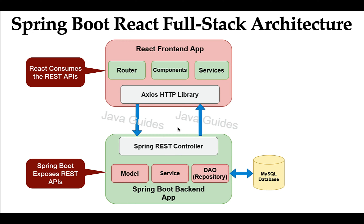This is the full-stack application architecture that we're going to follow in order to develop a full-stack web application using Spring Boot and React JS. This architecture follows the client-server model. At the client side we will build a React front-end application, and at the server side we will build a Spring Boot backend application. We are going to create a separate project for the React front end and a separate project for the Spring Boot backend. Both applications are loosely coupled — Spring Boot exposes the REST APIs and React consumes those REST APIs.